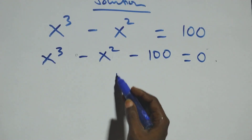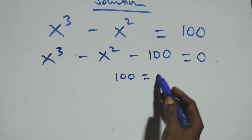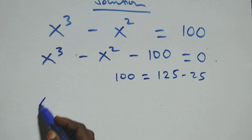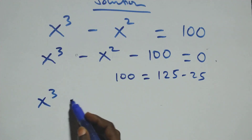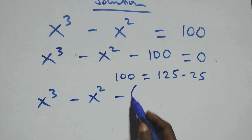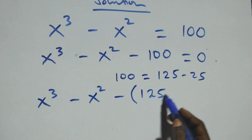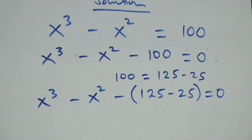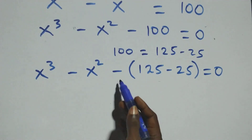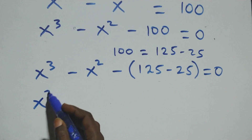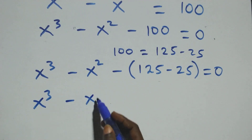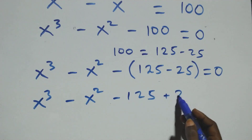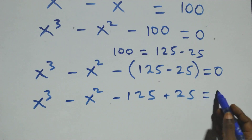Next, we can express 100 as 125 minus 25. So what we have becomes x raised to the power 3 minus x raised to the power 2 minus, in brackets, 125 minus 25, plus brackets, equals to 0. Then opening the bracket, this becomes x raised to the power 3 minus x squared, then minus 125, then plus 25 equals to 0.